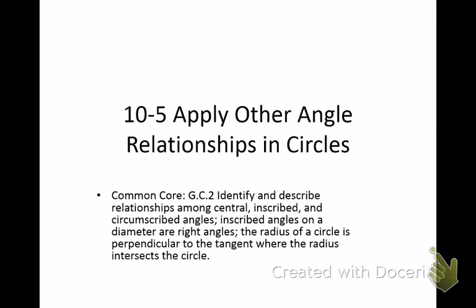We need to talk about the rest of the arc and angle relationships in a circle. We've talked about a couple already: central angles, where the vertex is at the center, and their measure is equal to the measure of the arc in front of it. Inscribed angles, where the vertex is on the circle, and the measure is equal to half the arc in front of it.